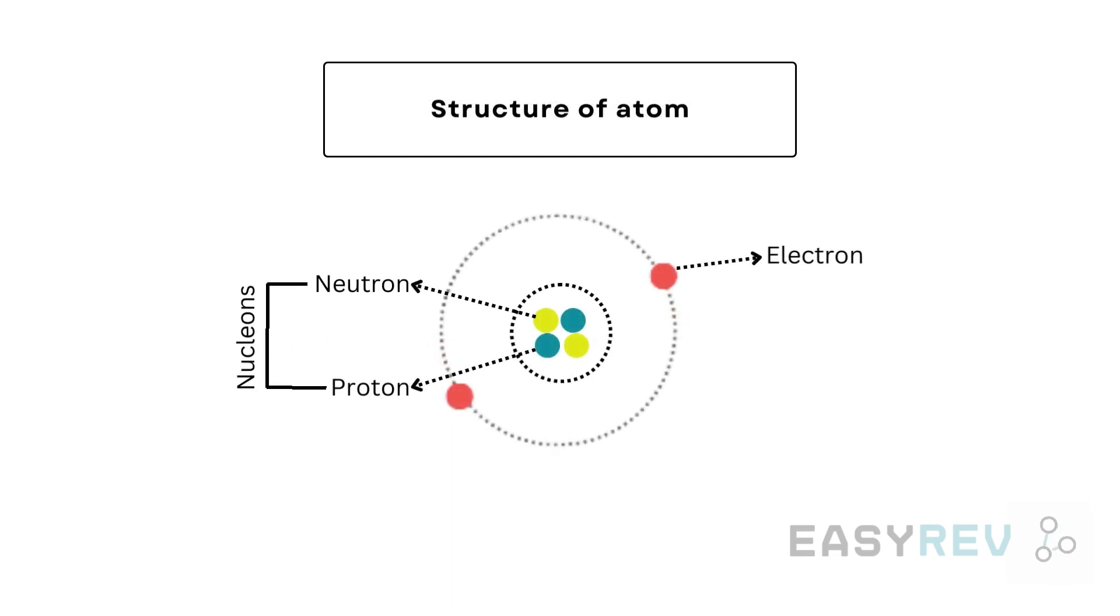Protons and neutrons, which are collectively also called nucleons, are found bundled up at the very center of the atom in a region that we call the nucleus. Here we represented the proton as a blue dot and the neutron as a yellowish green dot.